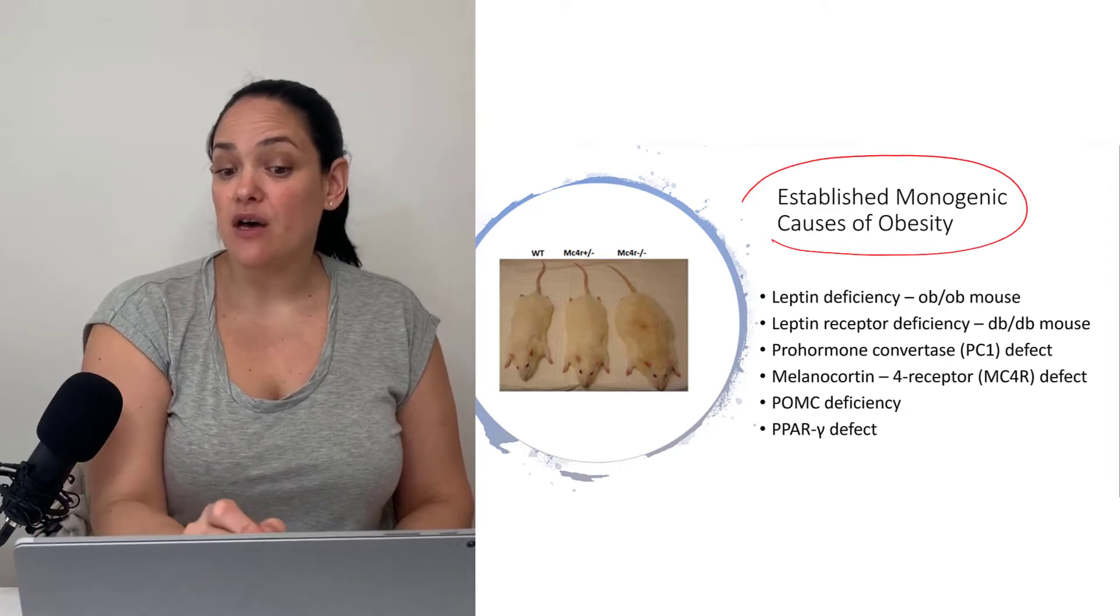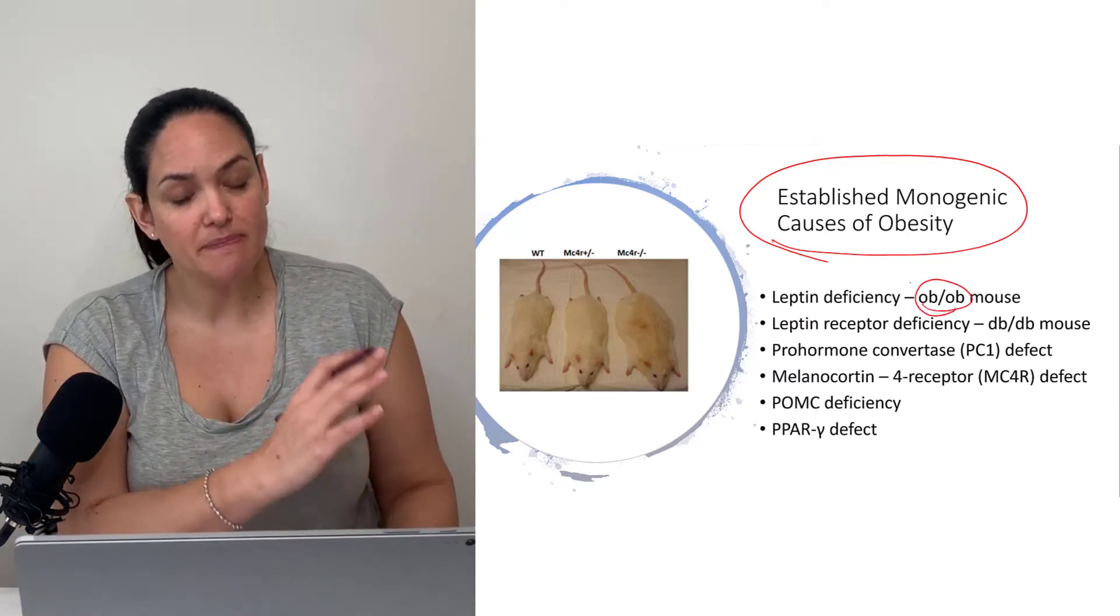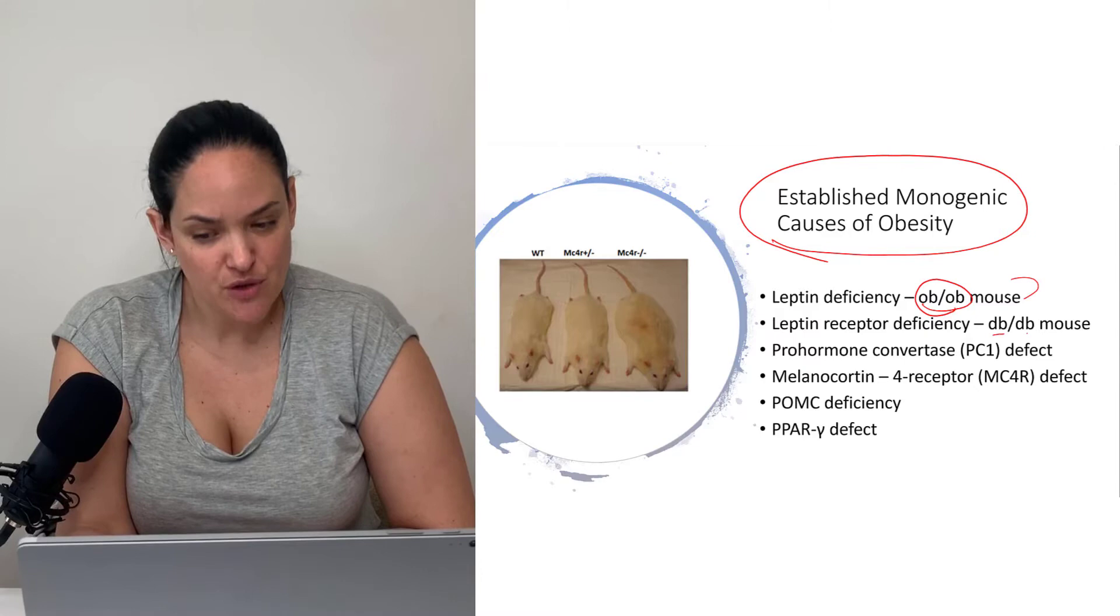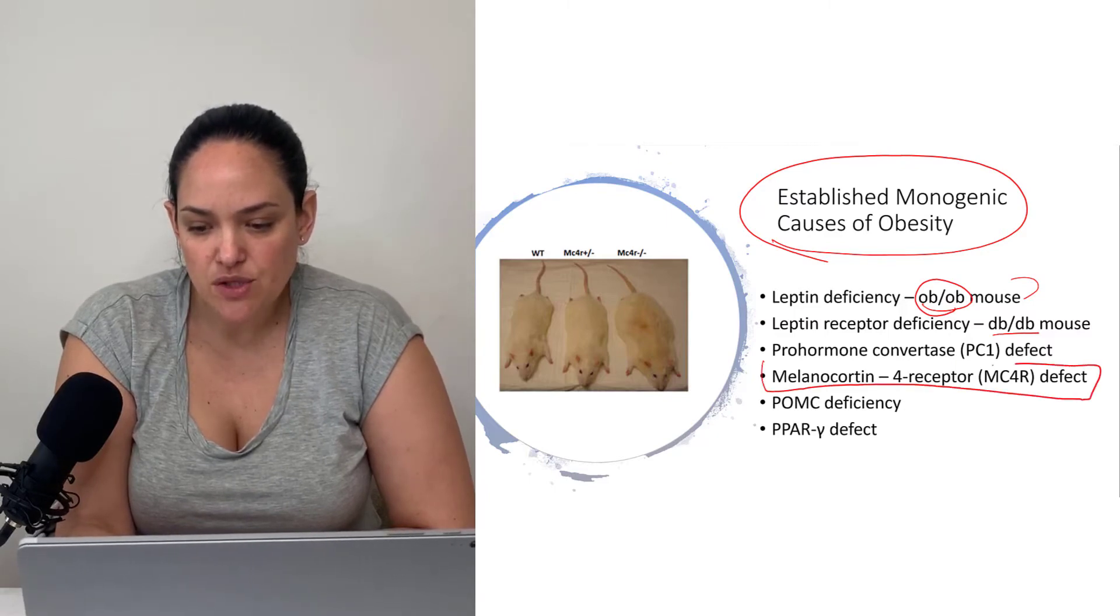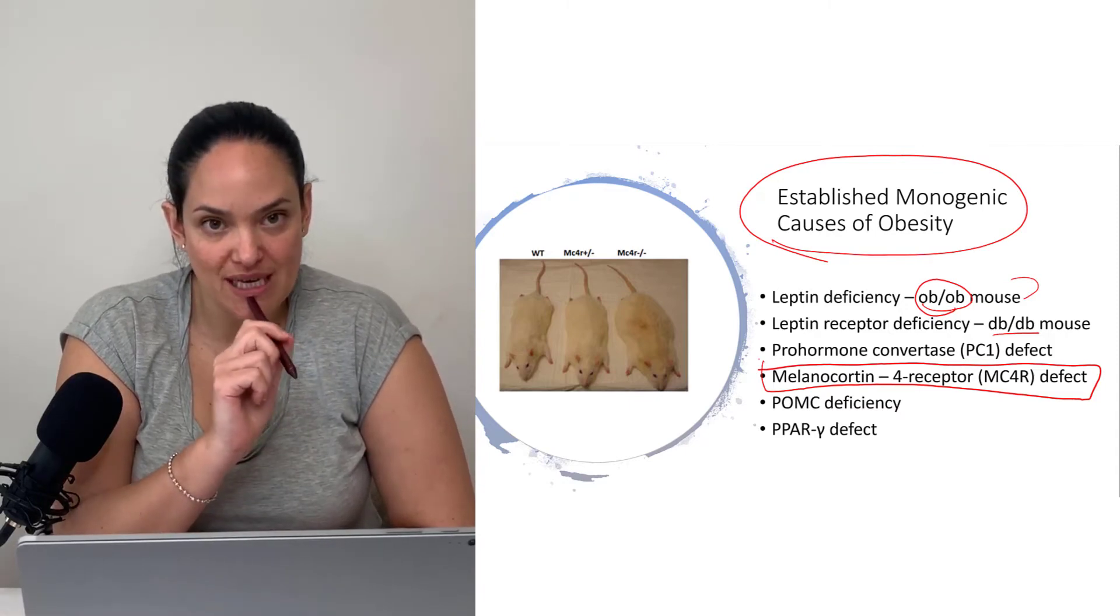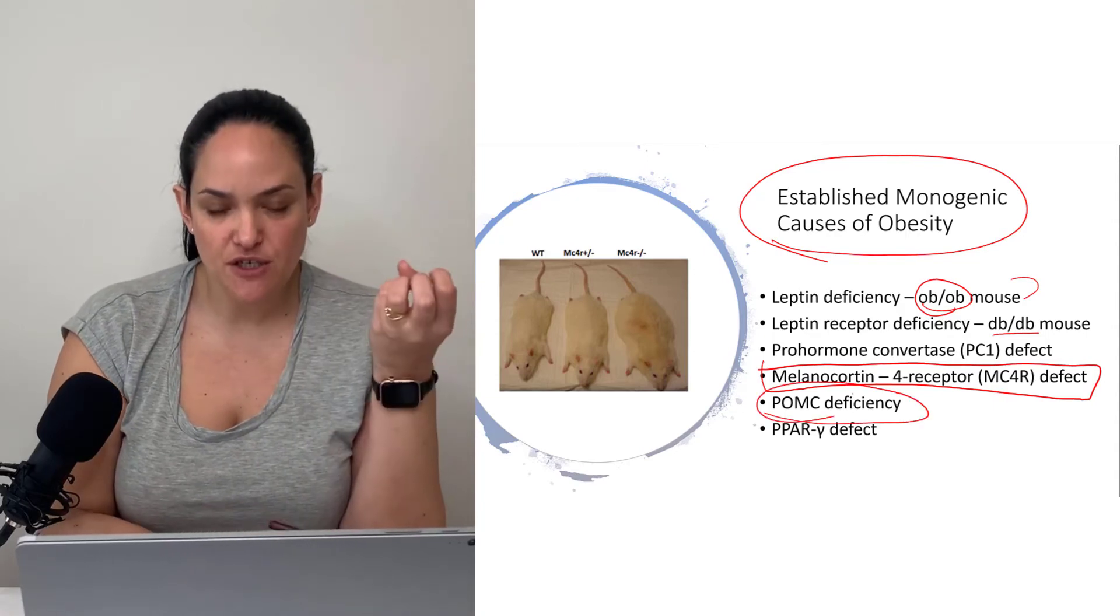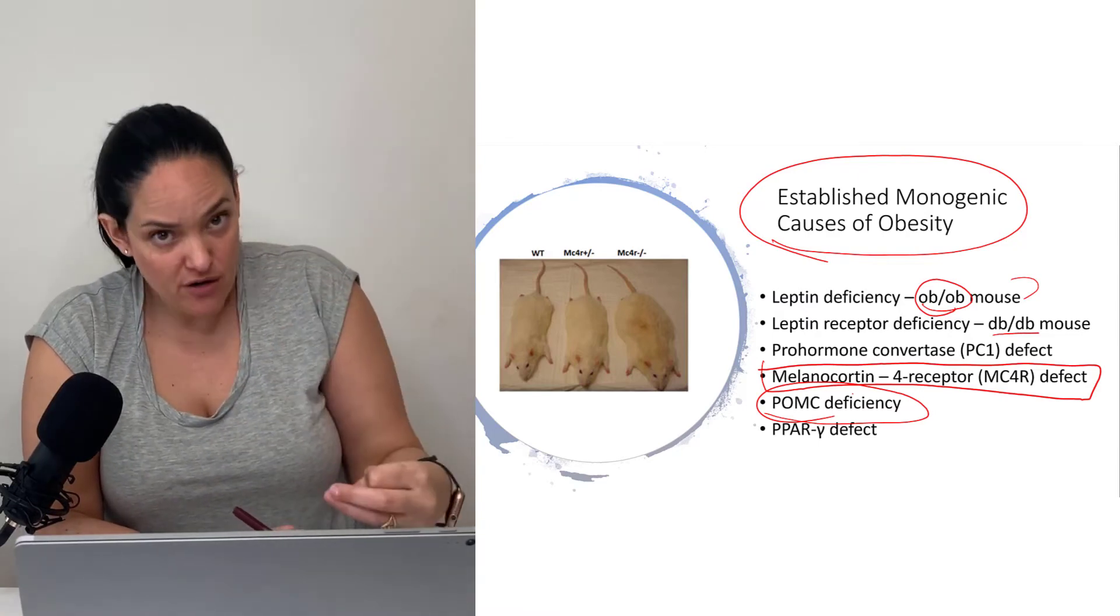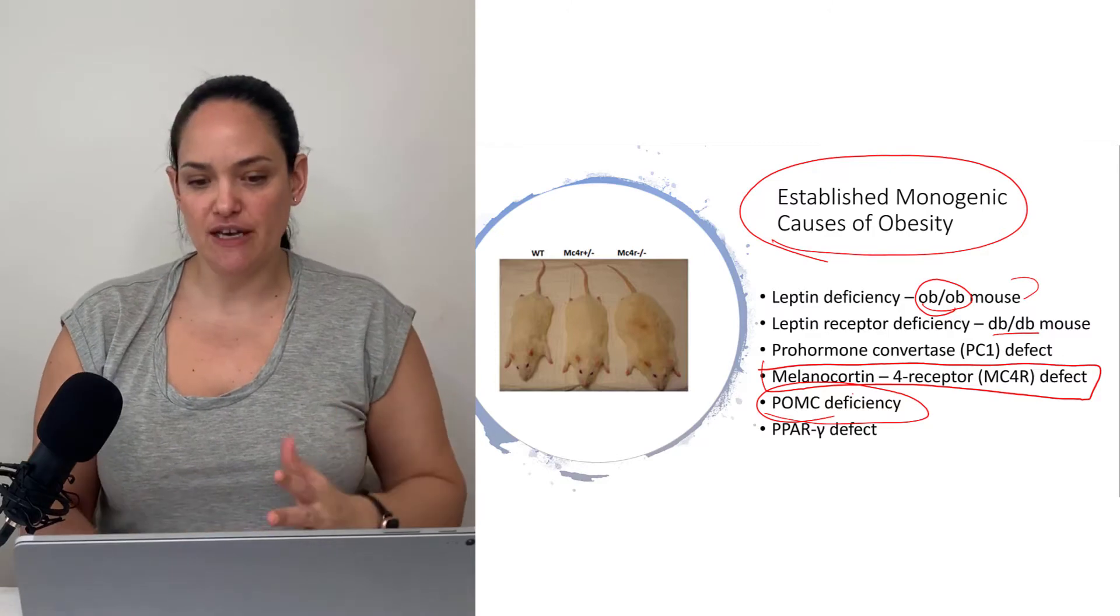When it comes to monogenic causes of obesity, we know some of them and these do happen. We've already learned about the OBOB mouse with leptin deficiency, but this is extremely rare. We saw the DBDB mouse as well, but the one that is actually the most common, and even still it's not that common, is a defect in the melanocortin-4 receptor, which is part of the appetite regulation pathway in the hypothalamus. All these monogenic causes of obesity are a lot more rare and typically not the main causes at the population level.